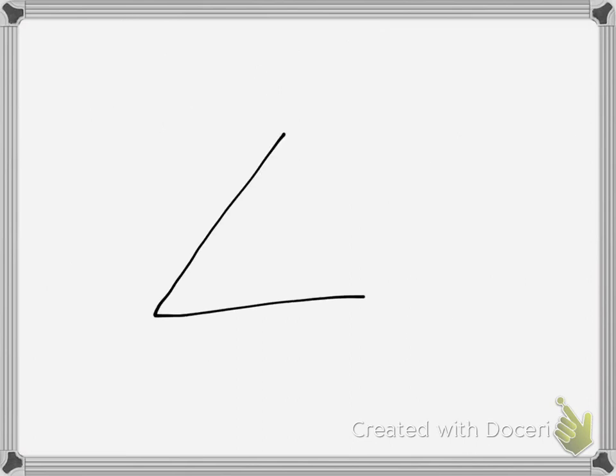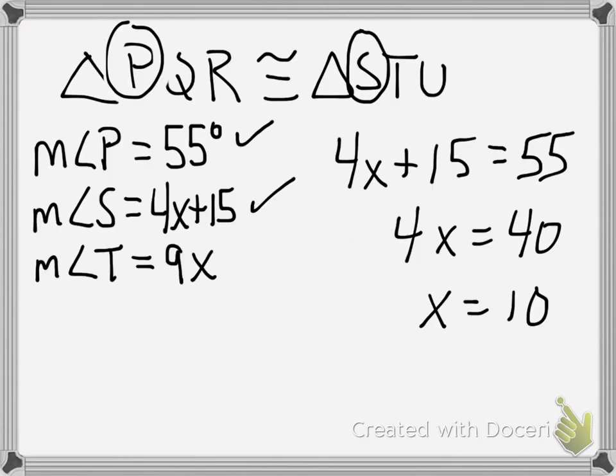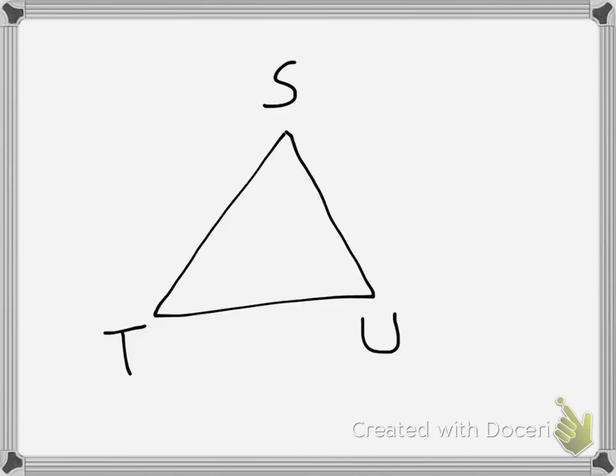So let's just take a little picture here of STU. Knowing that x is equal to 10, we can plug that in to find angle S, which is going to be 4 times 10, which is 40, plus 15. So angle S is 55 degrees. Right there.